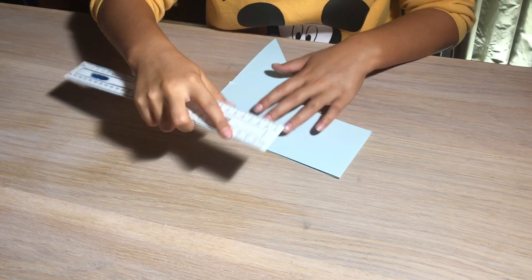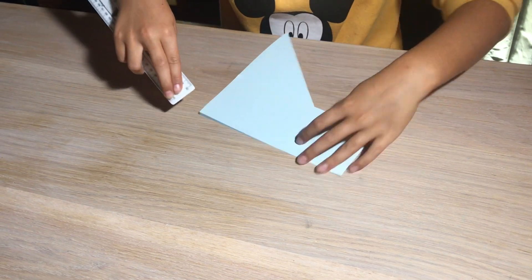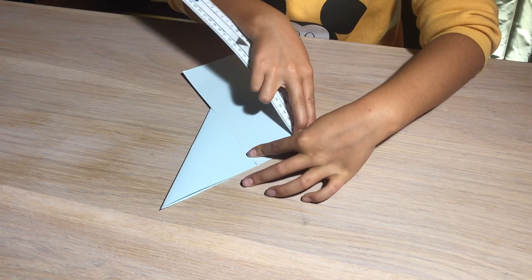Then you get a ruler and you scrape it across the edge. If you don't do it, then turn it around and scrape it the other way.